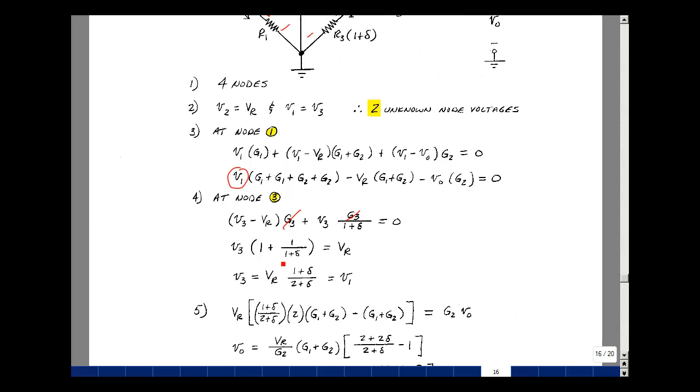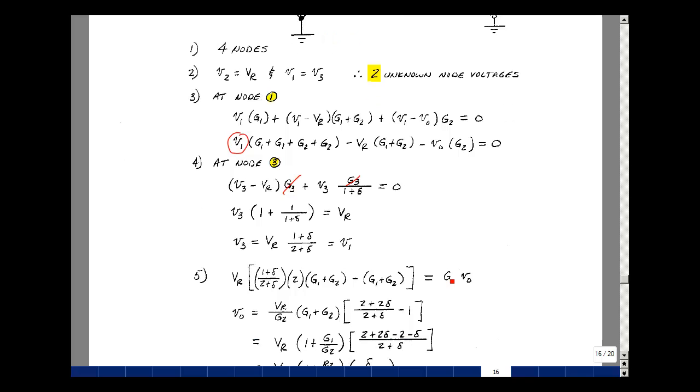So I've got the voltage V sub R times 1 plus delta over 2 plus delta. And that's going to multiply 2G1 plus 2G2. So here's that term. And then I've got minus V sub R. So here's my V sub R in front. And I've got G1 plus G2. And then I've got V out times G2. So I'll put that on the other side of the equation. Let's divide by G2. So I've got my V sub R here. And I could pull out the G1 plus G2. I have a 2 left over. That would multiply 1 plus delta. So here's my 2 multiplied by the 1 plus delta. So I get 2 plus 2 delta. And then I have a minus 1 here.